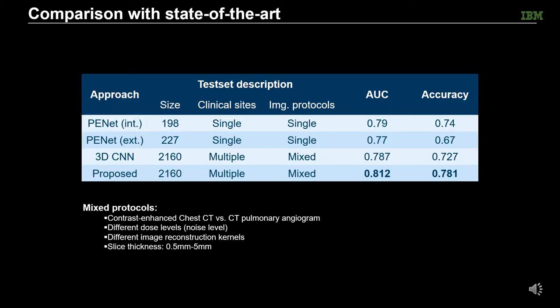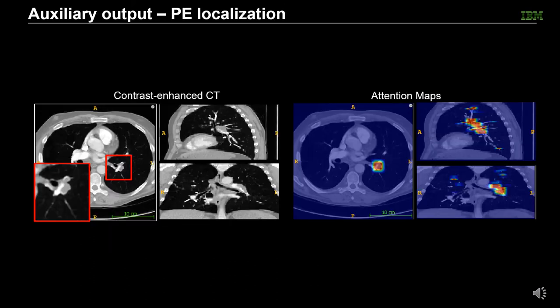Compared with the previous state-of-the-art methods, we achieved better results on a much larger and more challenging dataset. The proposed framework is also able to provide localized attention maps that indicate possible PE lesions, which could potentially help accelerate the diagnosis process. For more details, please refer to our presentation and paper.